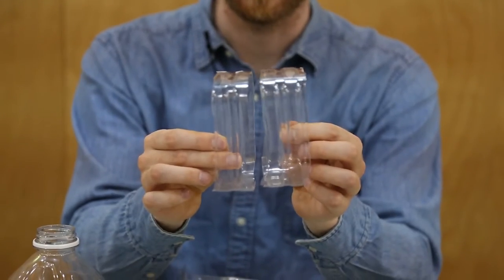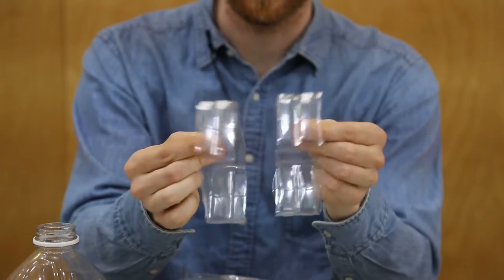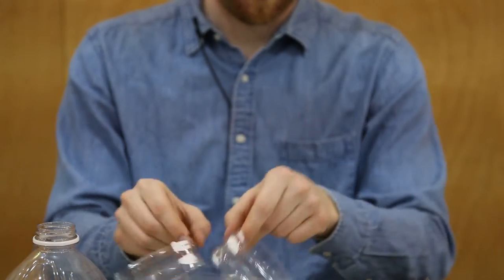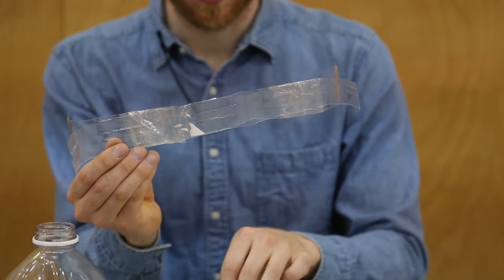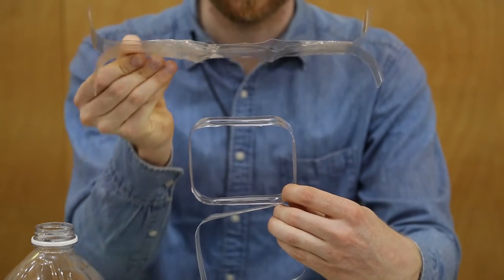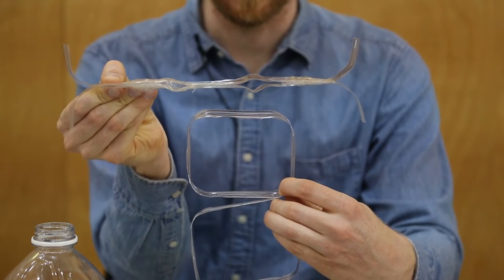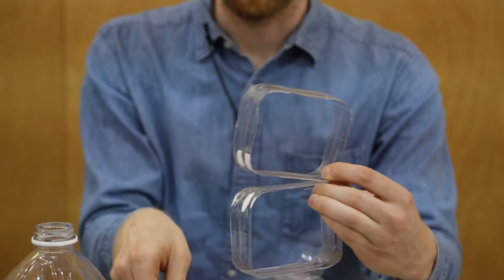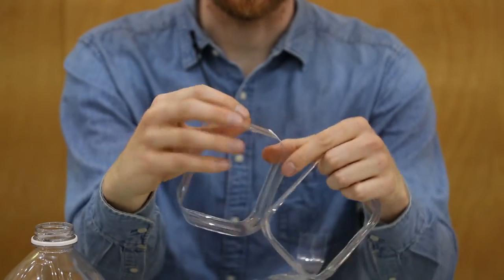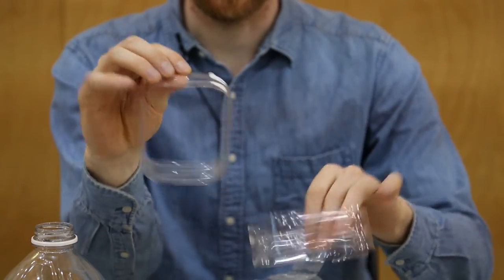I cut two sections that were two corrugations wide, which is about an inch wide. To turn these two loops into a straight piece, I'm going to cut them open at the seam and bend them straight.